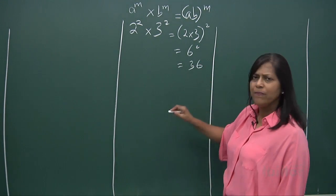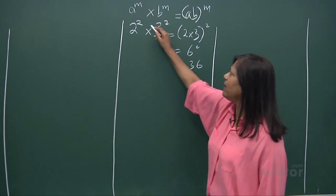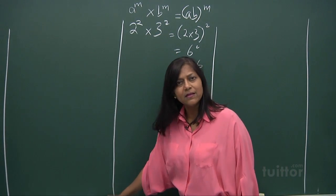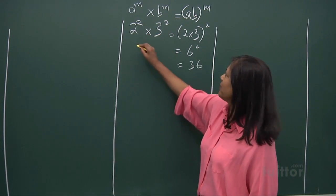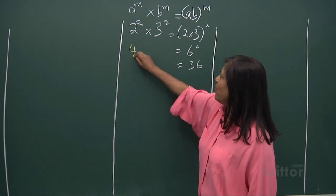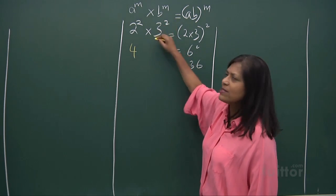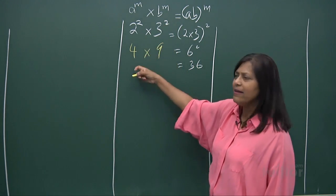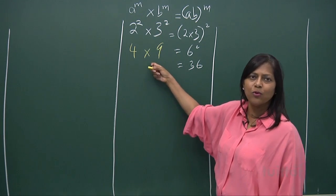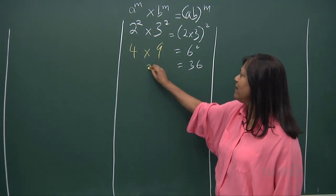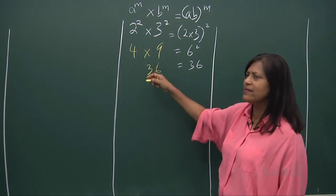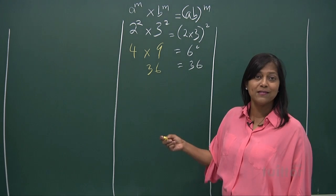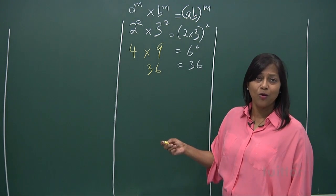Is it true? What is 2 squared? 2 squared is 4. What is 3 squared? 3 squared is 9. Isn't 4 times 9 equal to 36? Yes! That's how you get convinced by the laws.